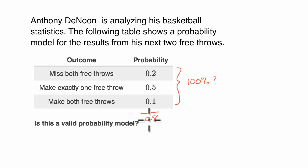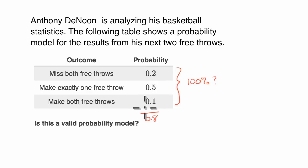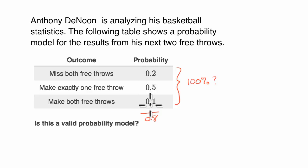So this is not a valid probability model. In order for it to be valid, all the various scenarios need to add up exactly to 100%. In this case, we only add up to 80%. If they added up to 1.1 or 110%, we would also have a problem. So the answer is simply no.